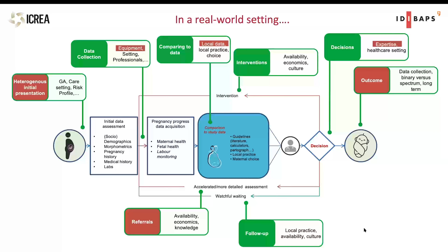We can identify clusters and really see what is the reason for patients to be there and how we have to treat them. In this whole way of clinical decision making supported by machine learning, we can contribute at all these different points: risk assessment, data collection, data acquisition, feature extraction, comparing to data locally. We can make continuous decisions — rather than just binary good or bad outcomes as with neural networks — and really quantify risks for decision making.